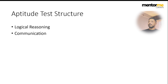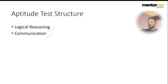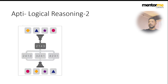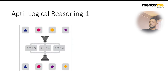The aptitude structure is mostly logical reasoning and communication. We'll do some sample questions to get an idea of what to expect. It's not the kind of logical reasoning from CAT or CFA papers — it's actually a lot easier — but you need some preparation so you don't go in blind. Let's start with the first question.